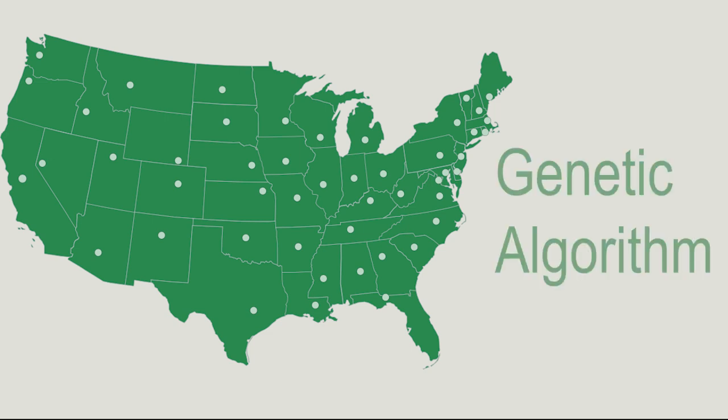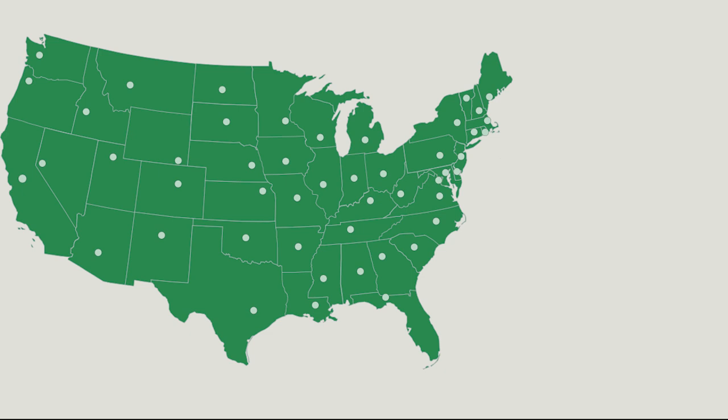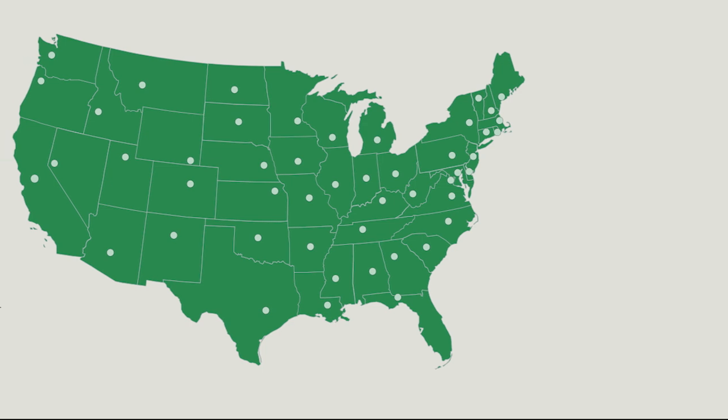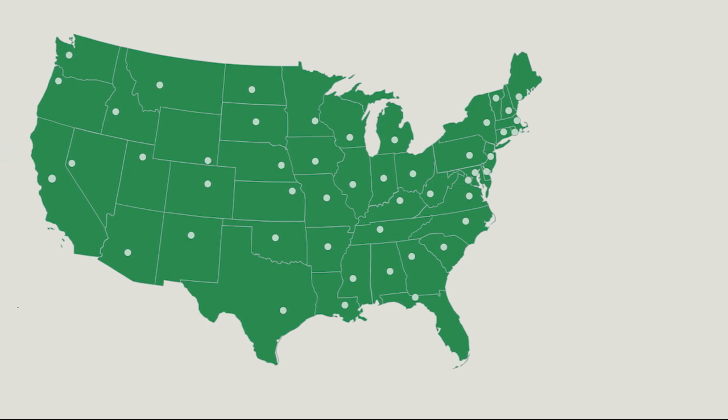A genetic algorithm is a form of AI that operates on the principles of biological evolution, that through trial and error solves a problem over many generations through the factors of mutation and the passing on of genes.